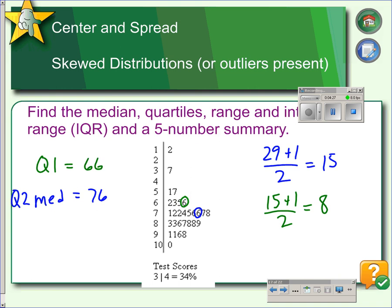So now the upper half also will have 15 values, so the 8th value on the upper half would be the median or Q3. So right there, Q3 is 88. So then to find the interquartile range or the IQR, we find the difference between Q3 and Q1. So 88 minus 66 is 22. So our IQR is 22.